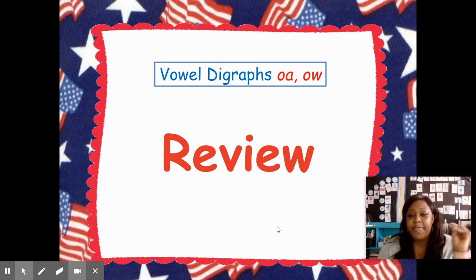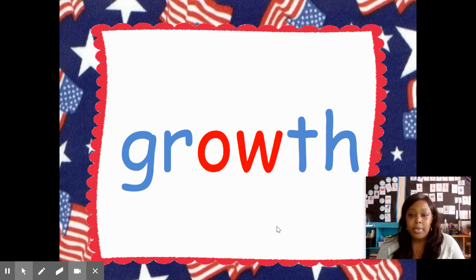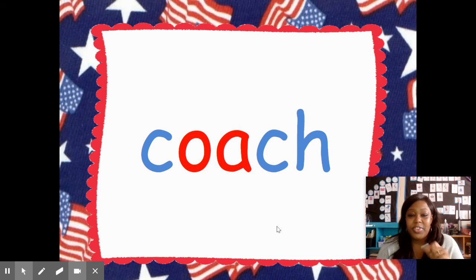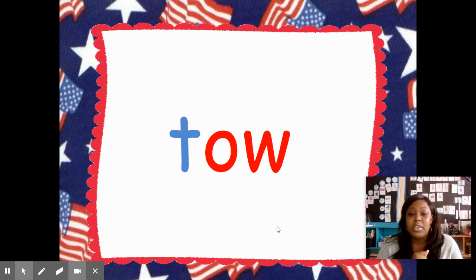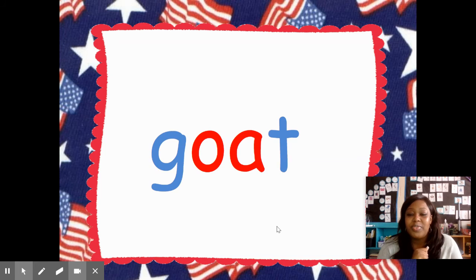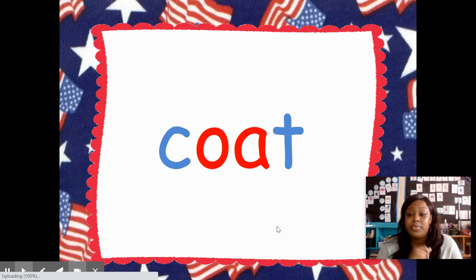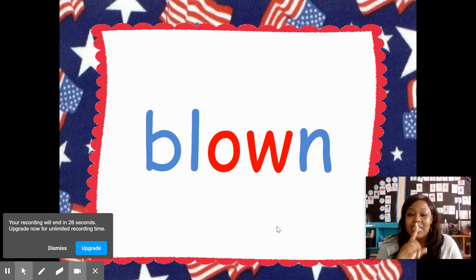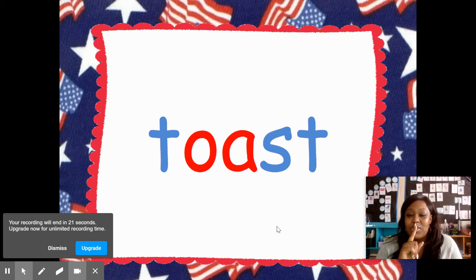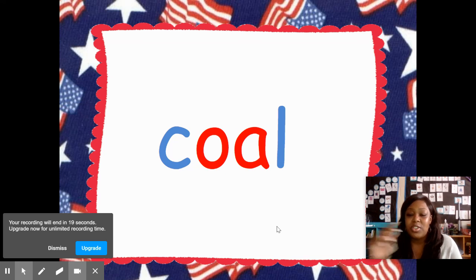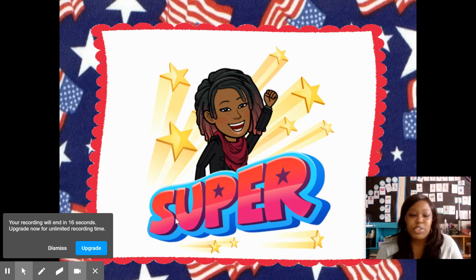All right, let's review quickly the vowel teams that we've learned this week — OA and OW, which both say the long O sound. Let's get ready to read these words. When I snap my fingers, you're going to read the word. Ready? Growth. Coach. Moan. Toe. Goat. Coat. Blown. Low. Toast. Awesome. Super job.